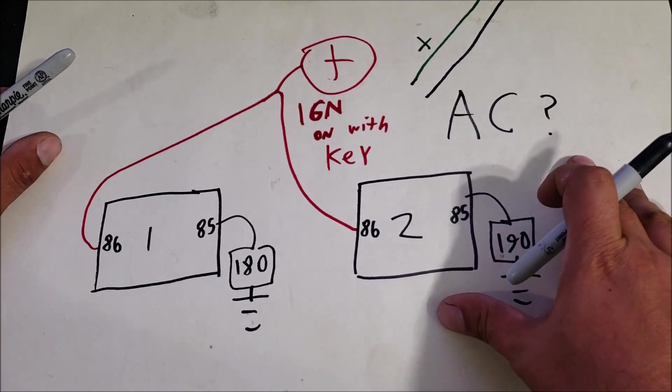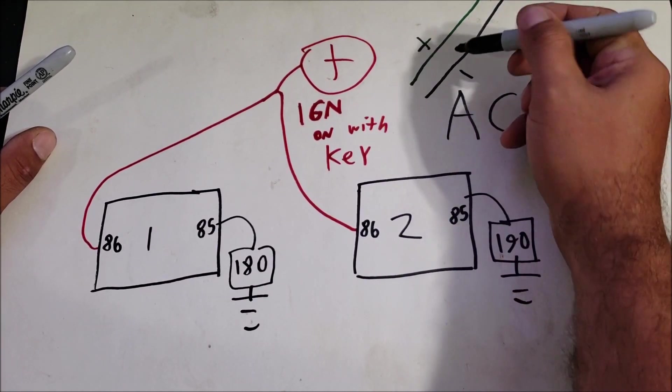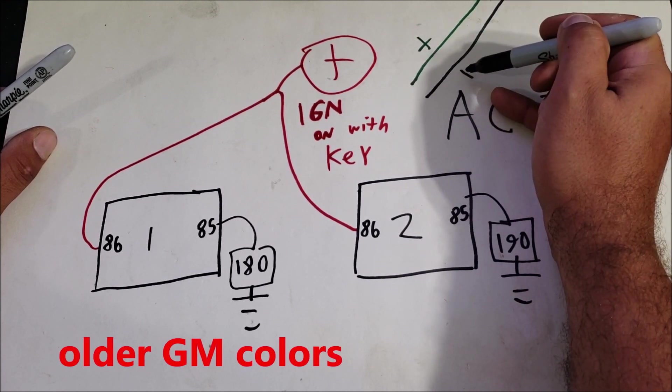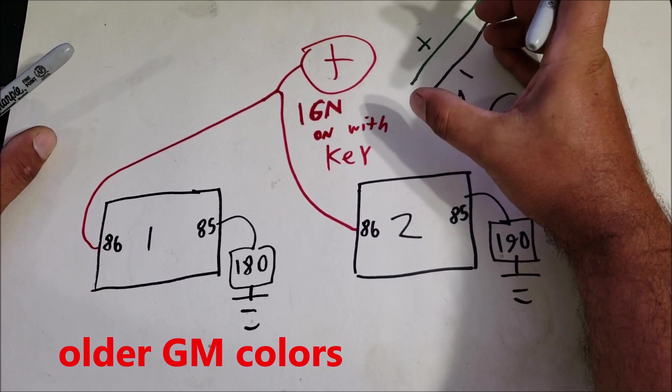In case you don't know, AC compressors got negative and positive. This is a green and black. It goes through a pressure switch, turns on your AC compressor out on the engine bay.